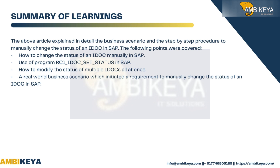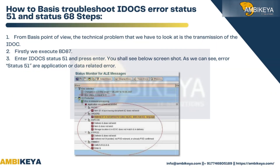The article explained in detail the business scenario and the step-by-step procedure to manually change the status of an IDoc in SAP. The following points were covered: how to change the status of an IDoc manually in SAP; use of program RC1_IDOC_SET_STATUS; how to modify the status of multiple IDocs at once; a real-world business scenario requiring manual IDoc status change; and how to troubleshoot IDoc error statuses 51 and 68.